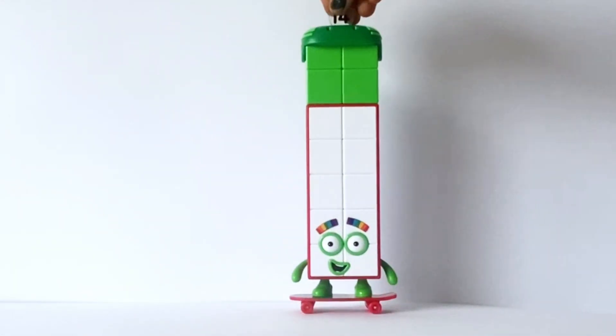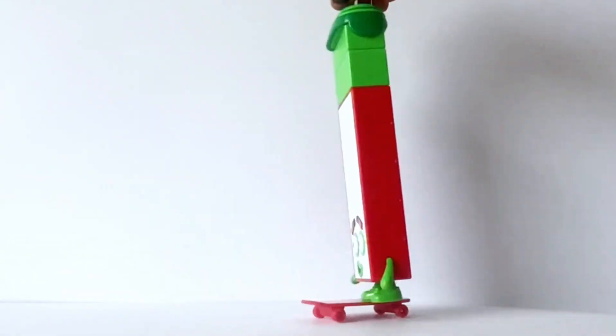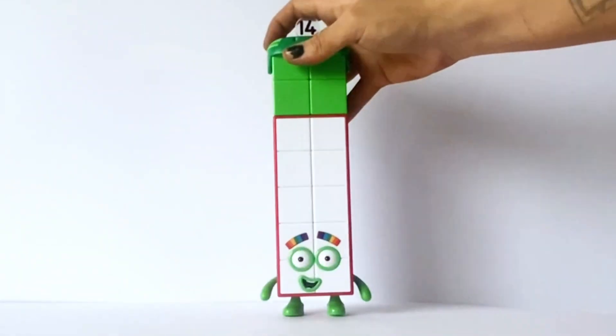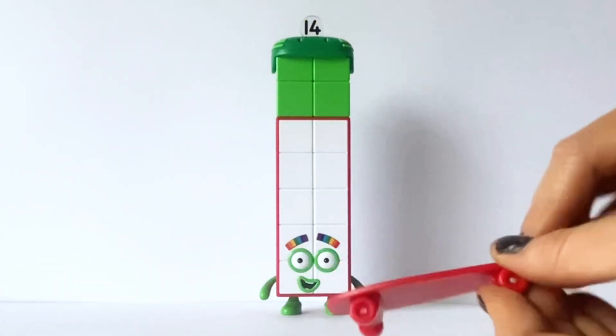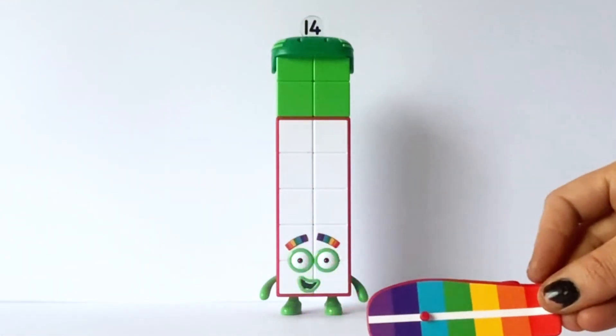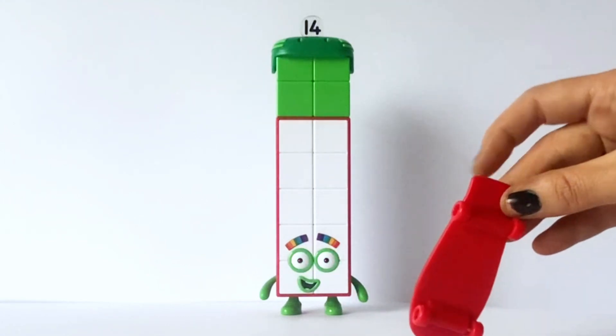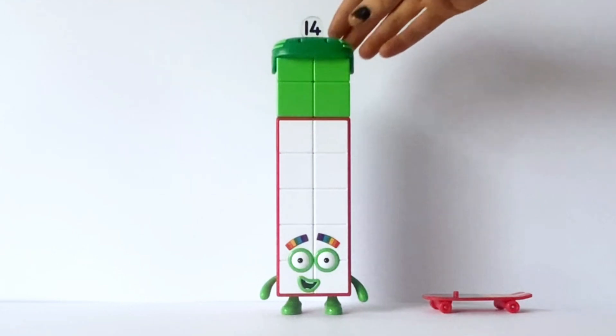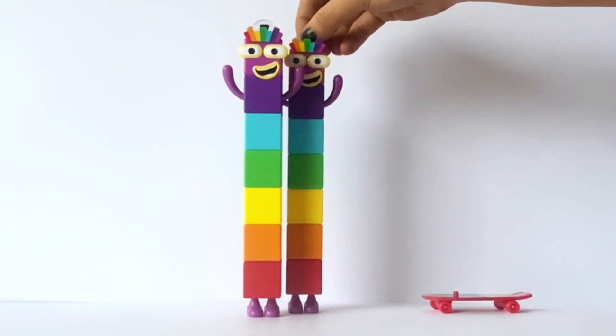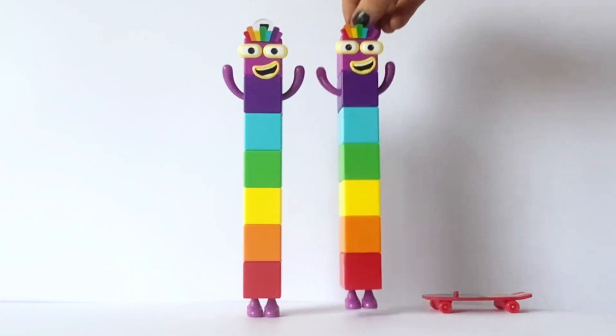Next we have NumberBlock 14. Extreme! NumberBlock 14 of course comes with his skateboard and his helmet. His skateboard has 7 colours on it like a rainbow. And this is because NumberBlock 14 is 2 lucky double 7s.